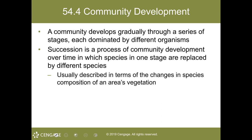Succession is usually described in terms of the changes in species composition of an area's vegetation. The time involved in succession is on the order of tens, hundreds, or thousands of years — not the millions of years involved in evolutionary time scale. The two types of succession are both primary and secondary succession.